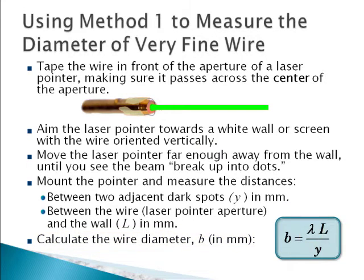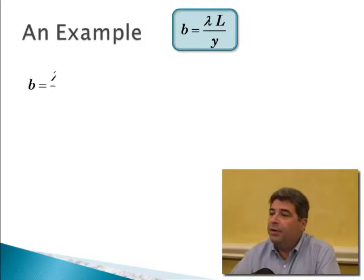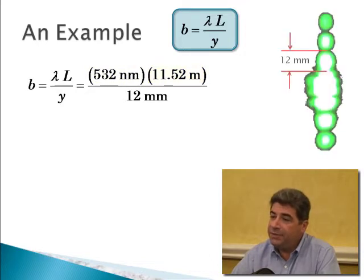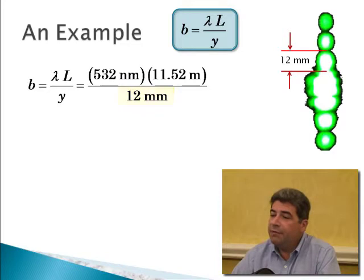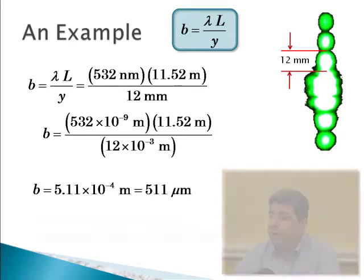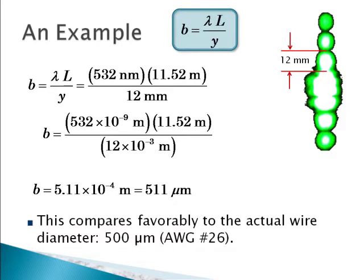Let's look at the example with measurements taken here in the lab. The wavelength of the laser pointer was 532 nanometers — a green laser. The distance between the laser pointer and the aperture was 11.52 meters, and the distance between the two adjacent dark fringes was 12 millimeters. Putting everything into the equation and carefully working with units — making sure all lengths are in meters — we calculated 511 micrometers, which compares very favorably with the actual wire diameter of 500 micrometers.